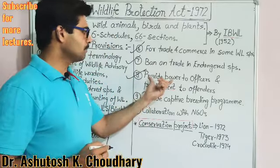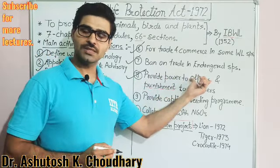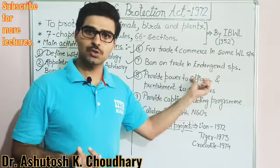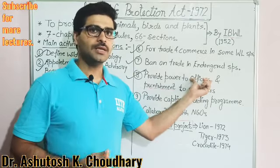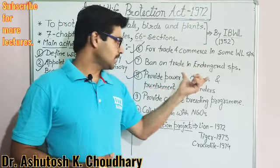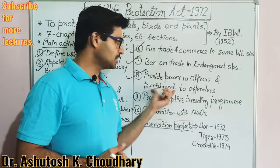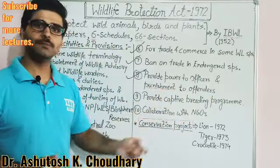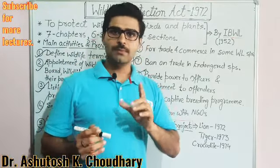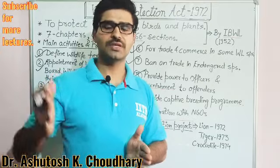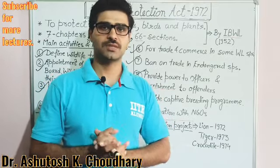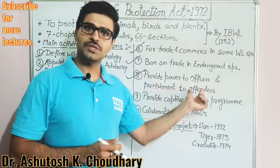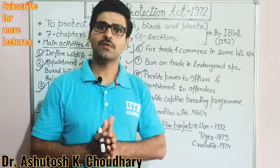The eighth point is that the act provides power to officers. The Wildlife Chief Warden and other officers who implement this act have clearly defined powers and duties under the Wildlife Protection Act. The ninth point covers punishment and fines for offenders. Under this act, the minimum punishment is one year imprisonment, up to seven years, and there is also a provision for a fine with a minimum of five thousand rupees.